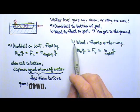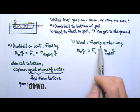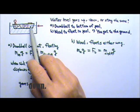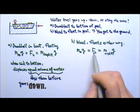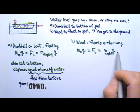For part B, either way the wood floats, either it floats in the boat or floats directly on the water, its weight is balanced by the buoyant force, which is the same as the weight of the displaced fluid.